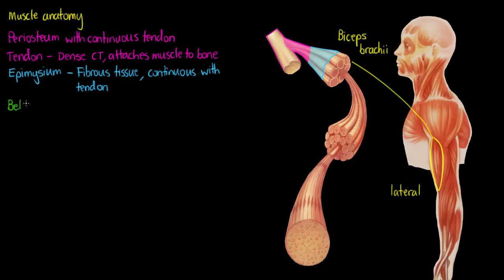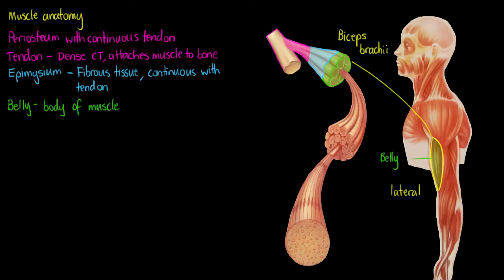The epimysium surrounds the whole muscle itself, and the proper name for that whole muscle is the belly — sometimes called the body as well. That refers to the entire collection of all of those muscle fibers and fascicles that we'll discuss in a moment. The belly, shown in green here, is the entire body of the muscle.